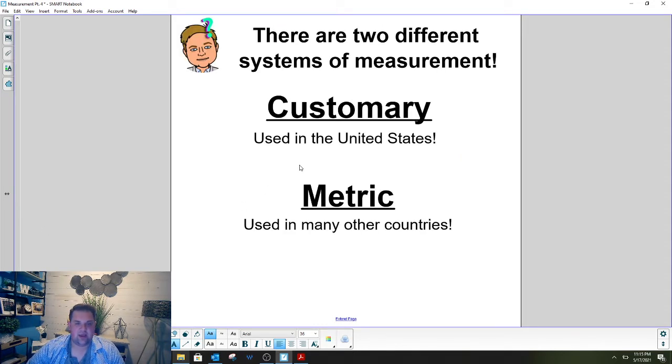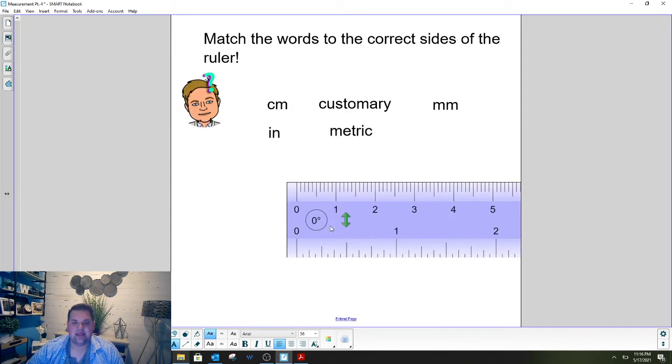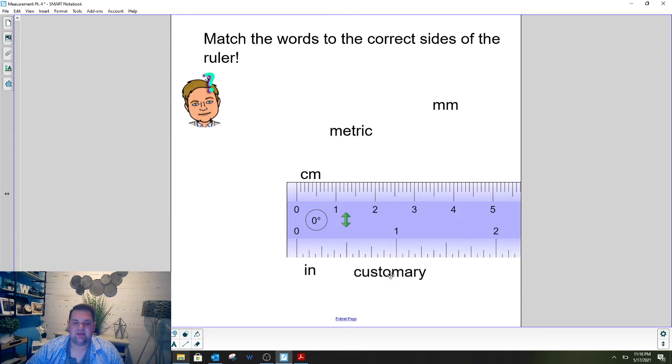Here is the first one but before we do I want to talk to you about how customary is used in the United States mostly and metric is used in lots of other countries. We talked yesterday about this ruler and we said that one side is customary and one side is metric. So as we label all the different sides, centimeters would be on this side because centimeters are smaller than inches. Inches would go over here. Customary goes with the inches because inches is a customary unit and metric goes with centimeters because it is a metric unit. And lastly millimeters are these little tiny lines in between each centimeter so that would go on this side of the ruler.